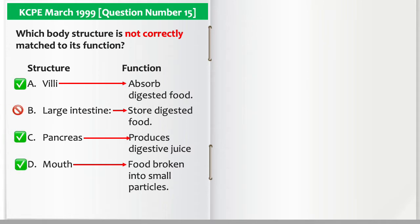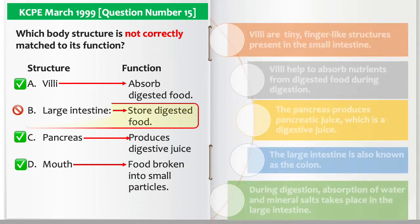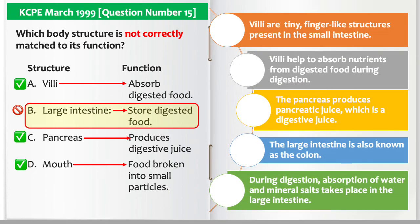The answer is B. Villi are tiny finger-like structures present in the small intestine. Villi help to absorb nutrients from digested food during digestion. The pancreas produces pancreatic juice, which is a digestive juice. The large intestine is also known as the colon. During digestion, absorption of water and mineral salts takes place in the large intestine.